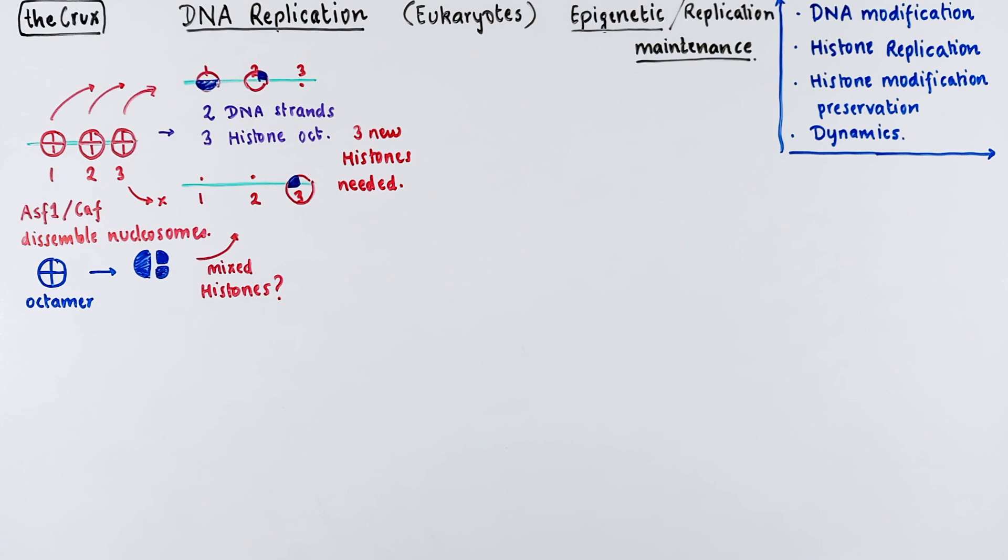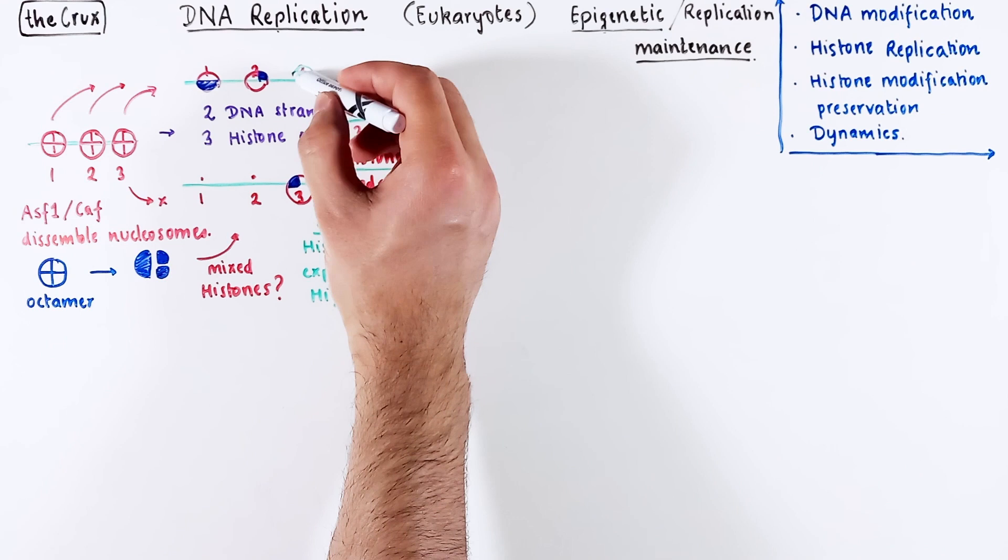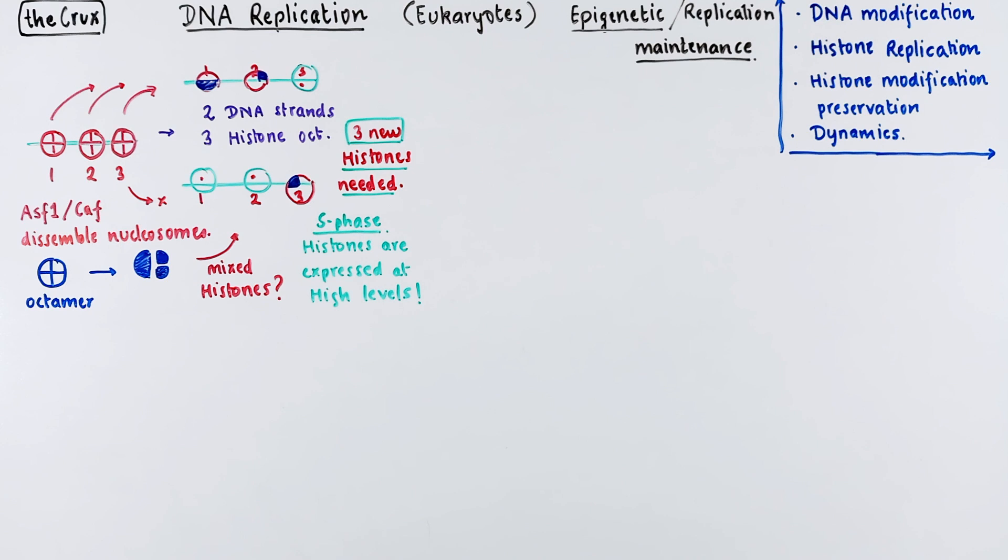Now to fill in the gap, the three new histones that are needed are formed during the S phase since S phase has histones expressed at very high levels. So it is easy to fill in the empty spots in S phase. That is one side of the problem.